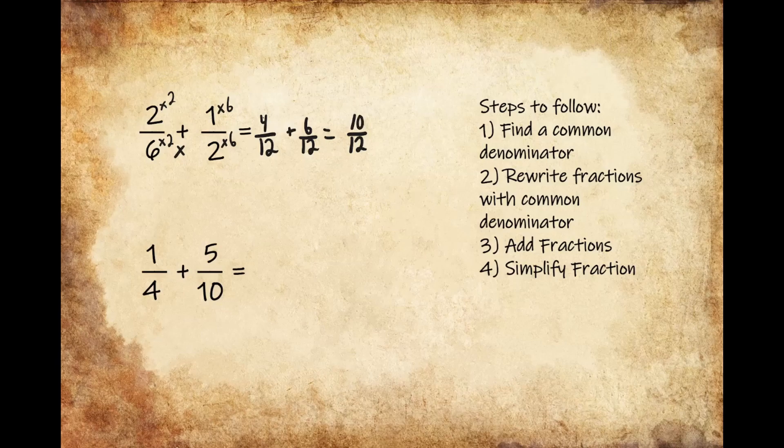As you can see here, there's still one more step left. We still have to simplify this fraction, which means we have to write this fraction in its lowest possible terms. Looking at this, I can see both 12 and 10 are multiples of 2.